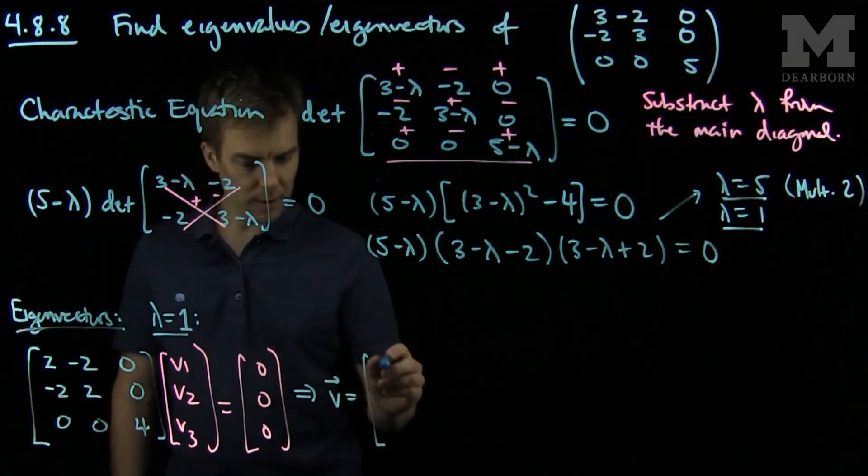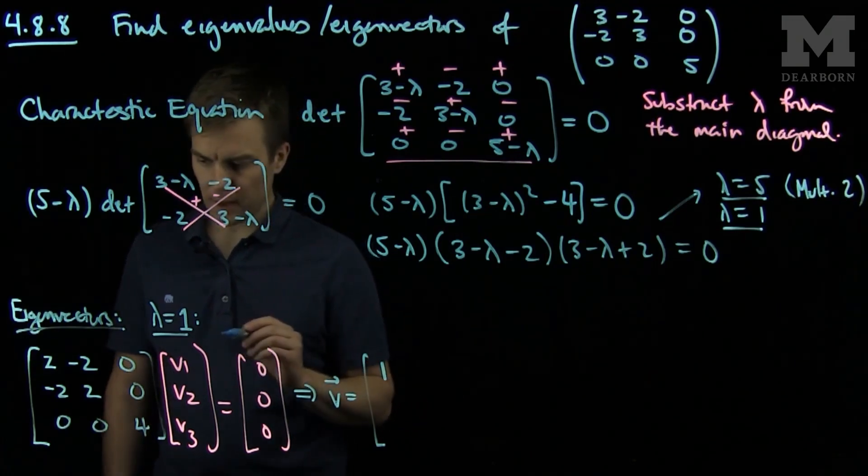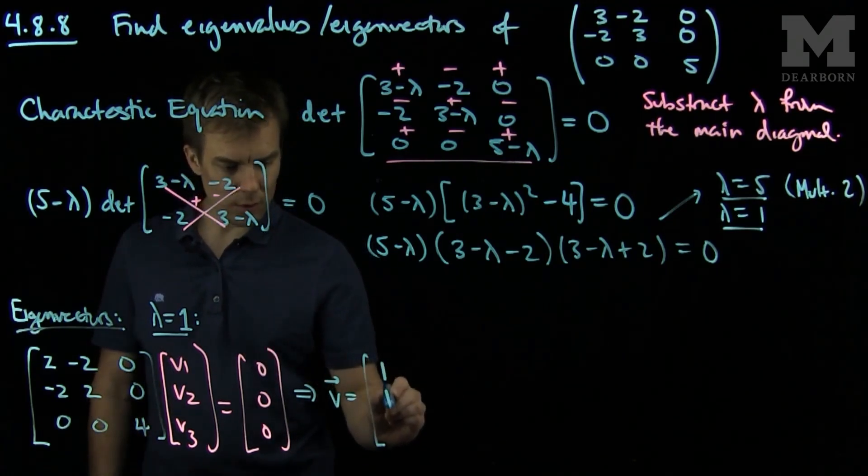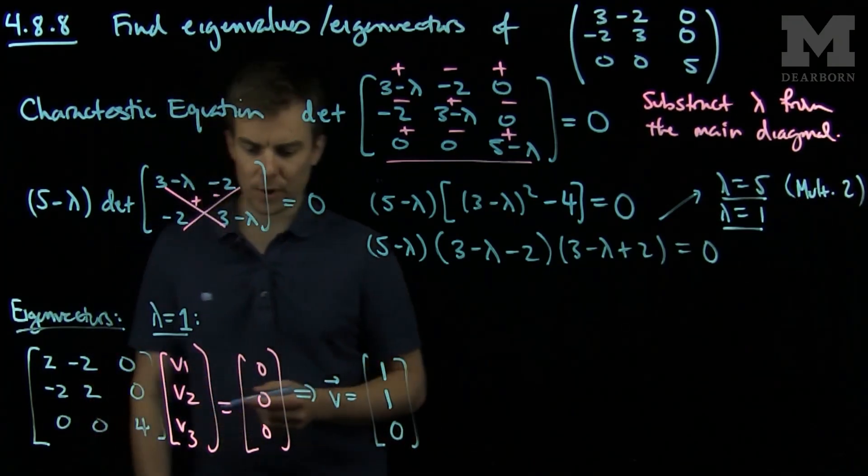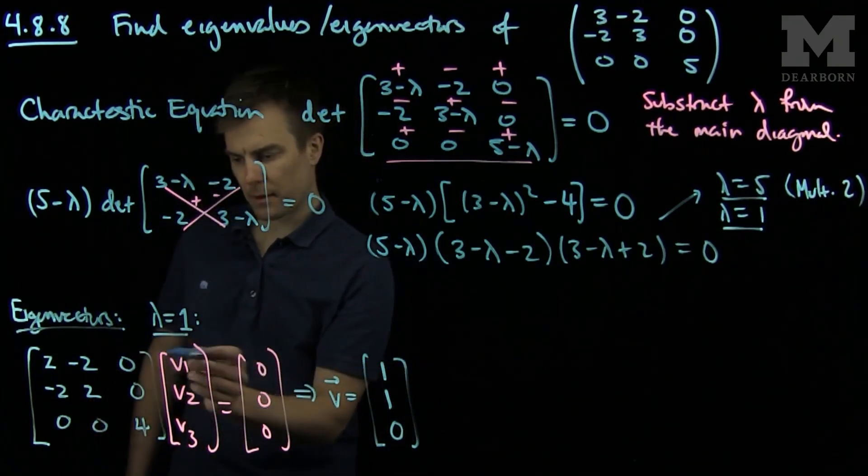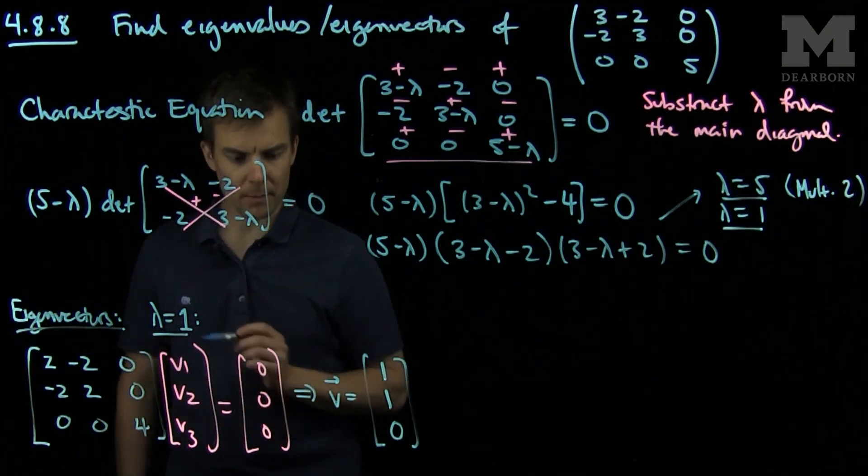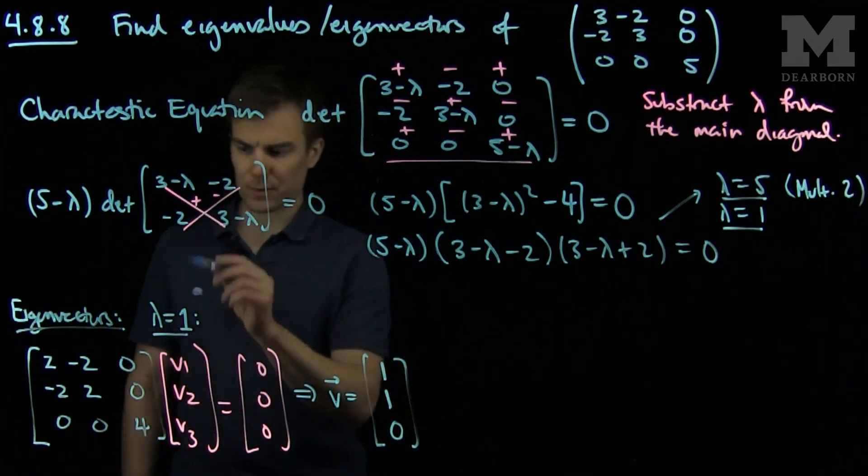If I choose v1 to be 1, and v2 to be 1, and v3 to be 0, we see that that choice will make this matrix apply to v equal 0. So this will be my eigenvector corresponding to lambda equals 1.